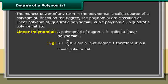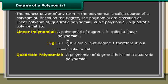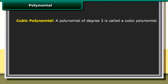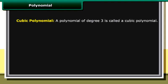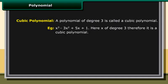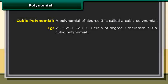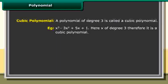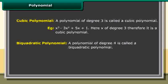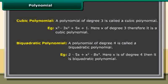Quadratic polynomial: A polynomial of degree 2 is called a quadratic polynomial. Cubic polynomial: A polynomial of degree 3 is called a cubic polynomial. Here x is of degree 3, therefore it is a cubic polynomial. Bi-quadratic polynomial: A polynomial of degree 4. Example: 2 minus 5x plus x² minus 8x⁴. Here x is of degree 4.